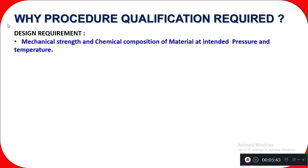Now, design requirements: what do you need to check, and why is procedure qualification required? You need to check the mechanical strength and chemical composition of the base material at the intended pressure and temperature. At the intended pressure and temperature, the material must be able to withstand the loads so there is no failure in the future.